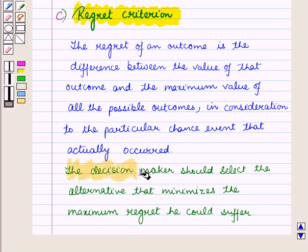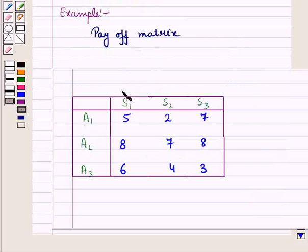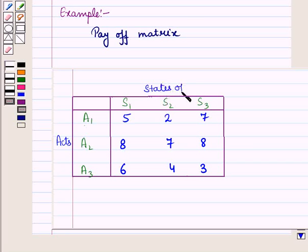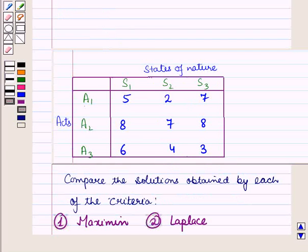The decision maker should select the alternative that minimizes the maximum regret he could suffer. Now we will discuss an example. Consider the following payoff matrix where A1, A2 and A3 are the acts and S1, S2 and S3 are the states of nature or the events. No probabilities are known for the occurrence of the nature states and we have to compare the solutions obtained by each of the criteria: first is maximin criteria, second is Laplace's criteria.